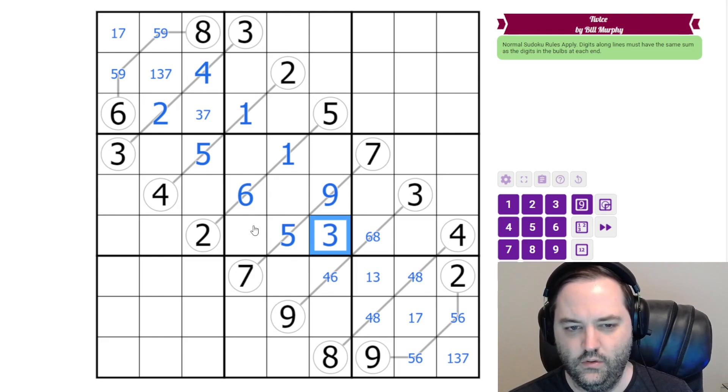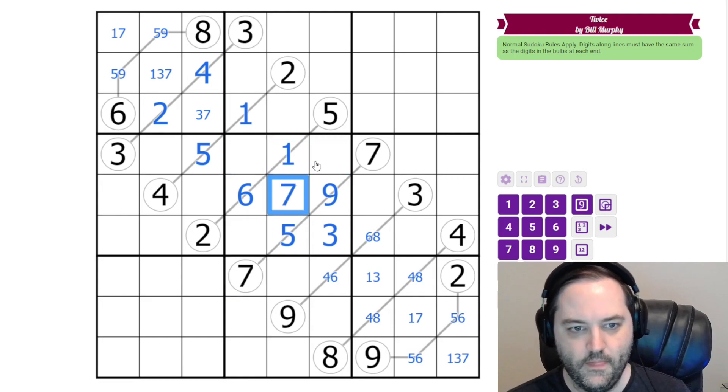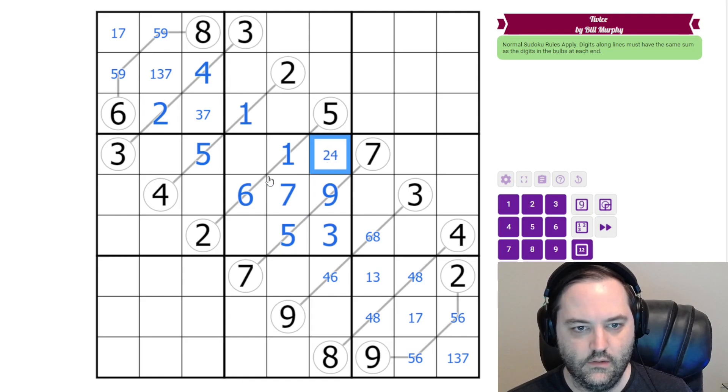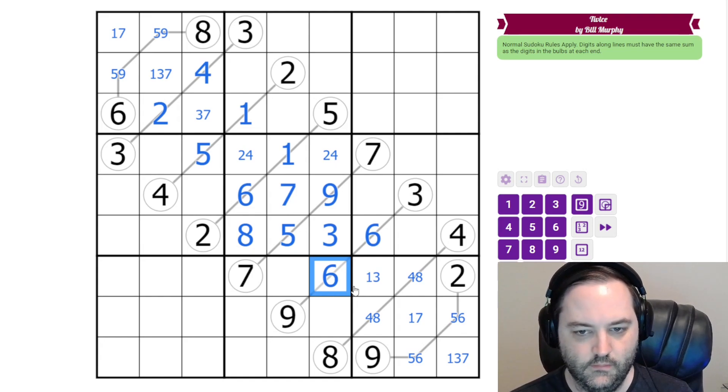We still need two, four, seven, and eight. The seven has to go in the middle. And this is not eight. And this is not two or four. It is eight. And that's going to resolve our twelve clue over here. This does have to be six, six. So that's done.